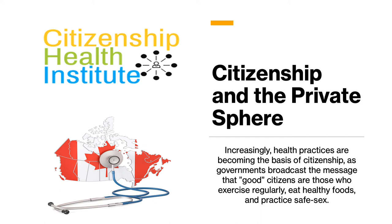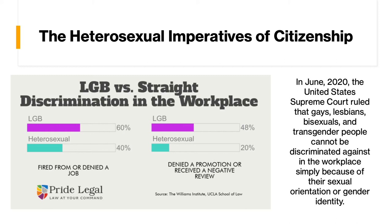Along with health citizenship, there has increasingly been discussion of sexual citizenship and of the ways in which modern states determine access to rights and resources on the basis of sexuality. To what extent is citizenship dependent on sexuality? Specifically, how has membership in national communities been associated with the institutionalization of heterosexuality? Scholars have come to realize that citizenship is often built on heterosexual norms that have historically been used to deny sexual minorities access to national resources and rights.